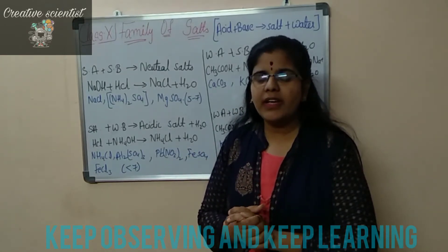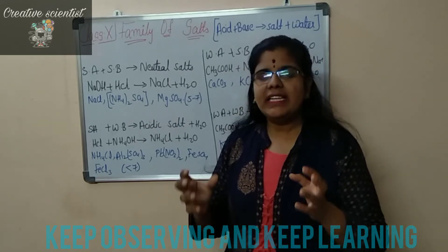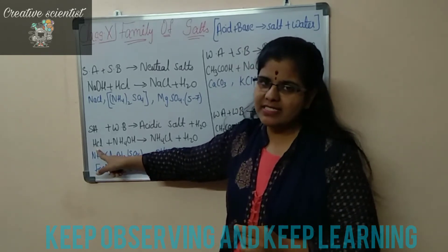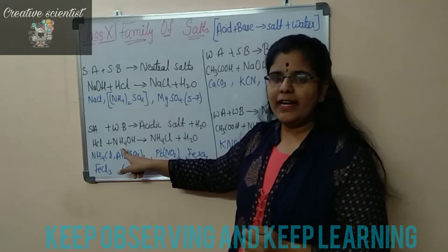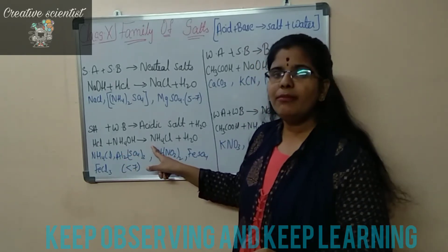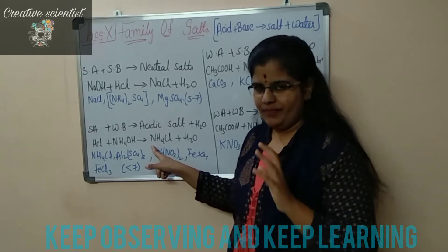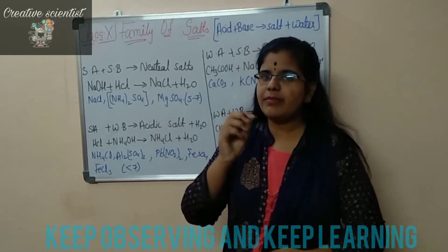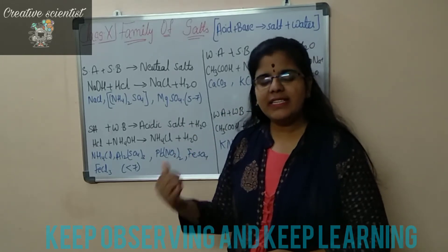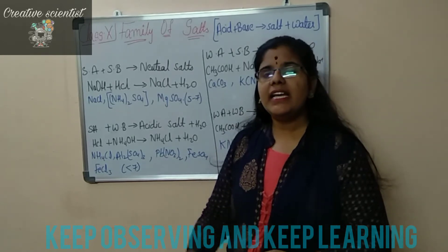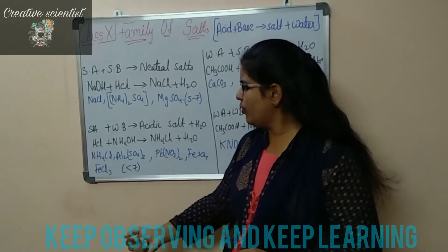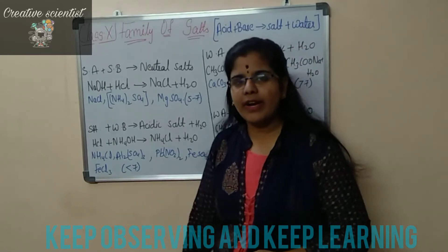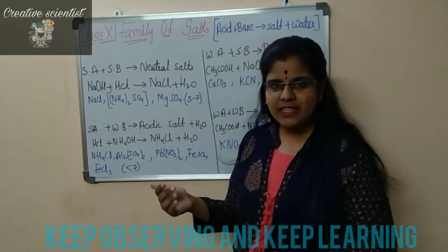When will acidic salts be formed? When a strong acid and a weak base react, they give out acidic salts. For example, when hydrochloric acid, which is a strong acid, reacts with ammonium hydroxide, which is a weak base, they give out ammonium chloride, which is an acidic salt, and water. The pH of acidic salts ranges below 7, since acids range from 0 to 7. A few more examples of acidic salts are ammonium chloride, aluminium sulfate, lead nitrate, ferrous sulfate, and ferrous chloride.